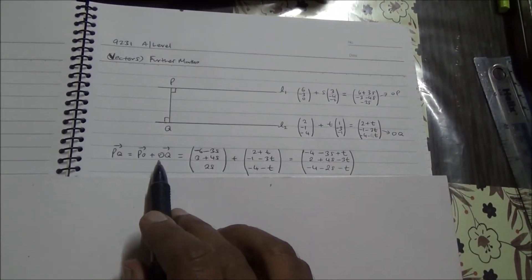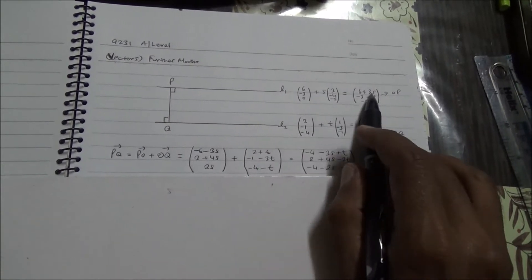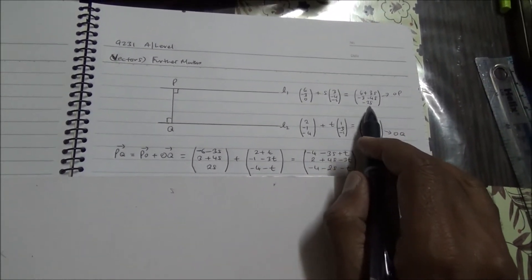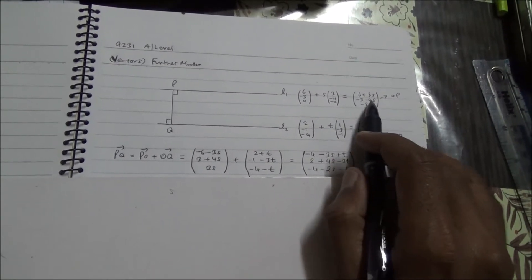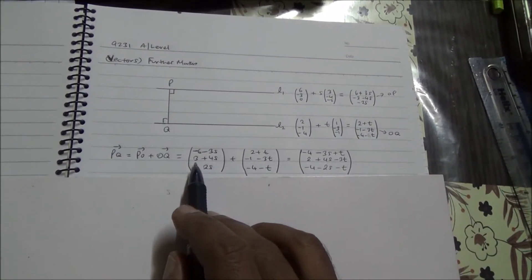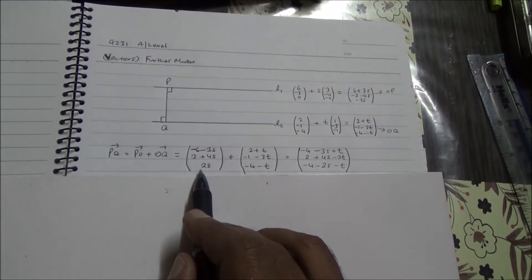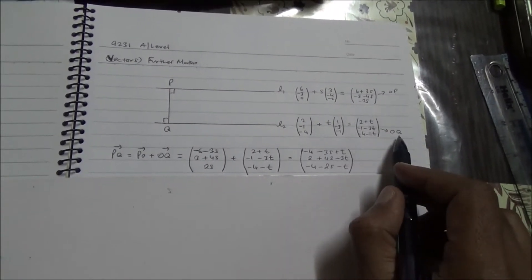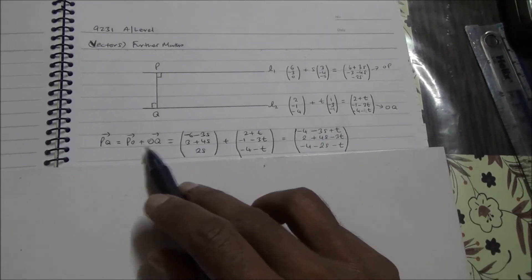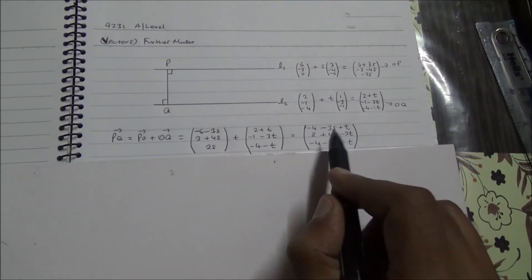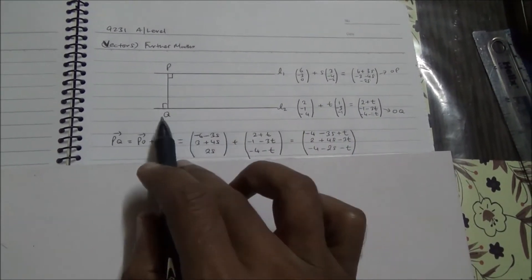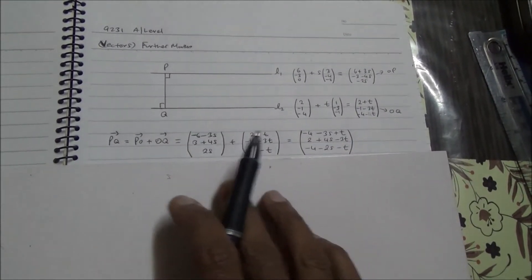PQ equals PO plus OQ. PO is the negative of OP, which is (minus 6 minus 3S, 3 plus 4S, plus 2S). Adding OQ gives us the vector PQ. We're going to dot product PQ first with the direction vector of L1, and then with the direction vector of L2, producing two equations.